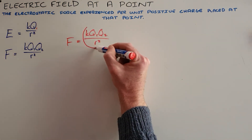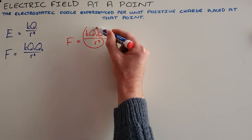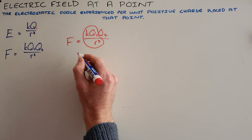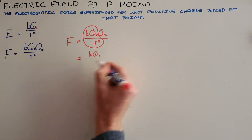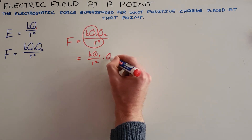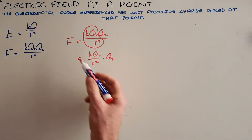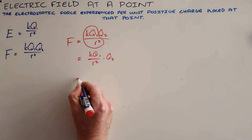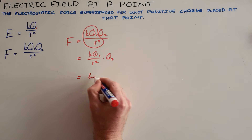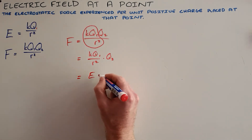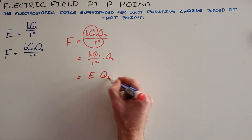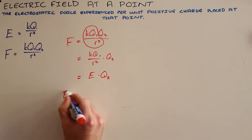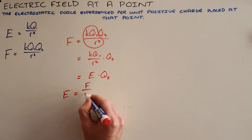The first part of Coulomb's law tells us that the force is equal to K times Q1 divided by R squared, which we can rewrite times Q2. This tells us that the force experienced between two charges is equal to the product of the electric field — the expression for the electric field around one of the charges — multiplied by the charge experiencing that force. This can then be rewritten as E is equal to F over Q.